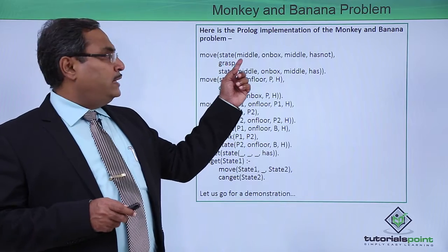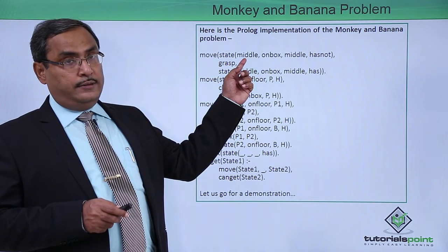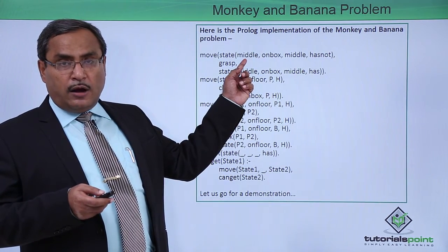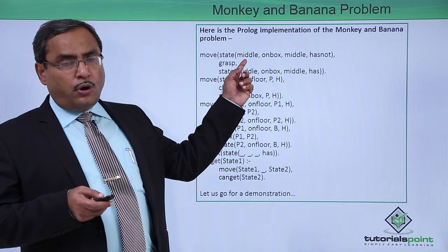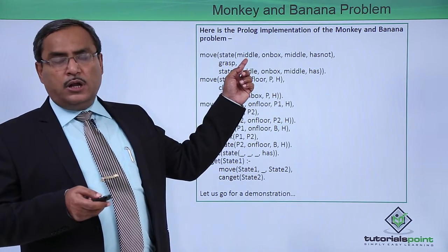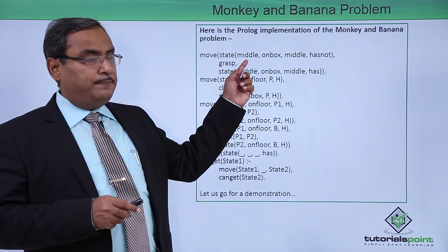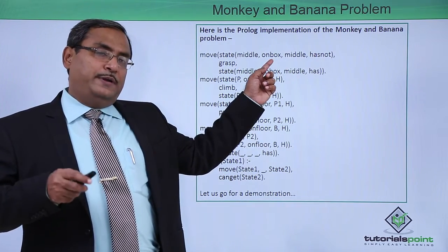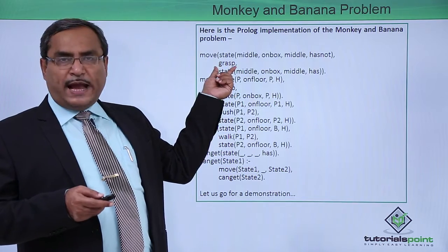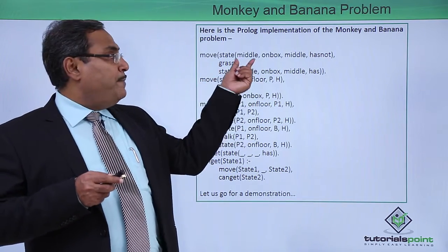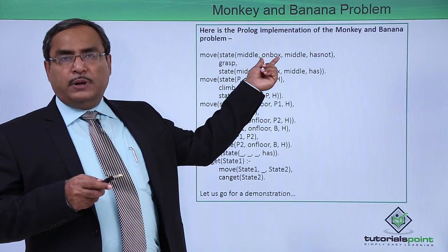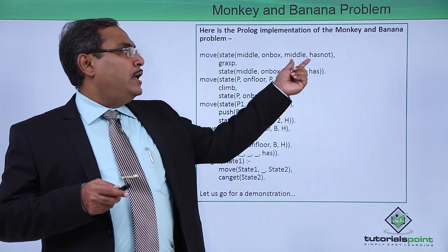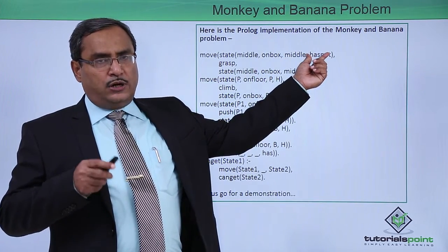In the case of grasping, there is a horizontal position of the monkey — it can be at the middle of the room, at the window, or at the door. And there is a vertical position of the monkey — it can be either on the floor or on the box. For the grasp action, the monkey must be at the middle of the room, on top of the box, the box must be at the middle of the room, and the current status must be 'has not' — meaning the monkey has not got the banana yet.